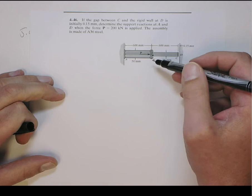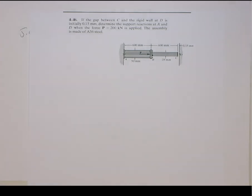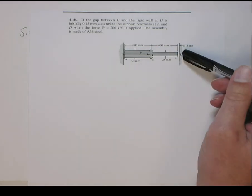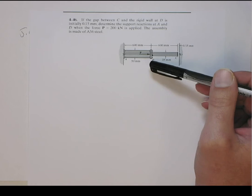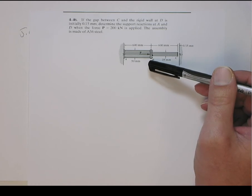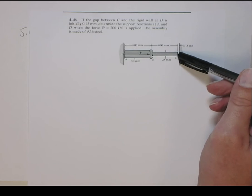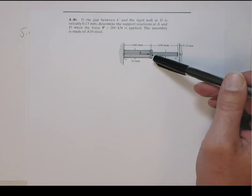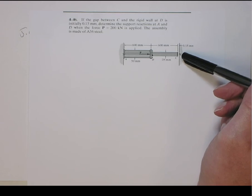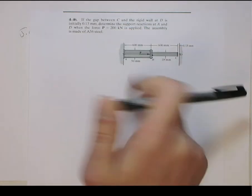Then we apply a force of 200 kN, and it wants you to find the support reactions at A and D. What's going to happen is if the force P is sufficient to elongate this such that it comes into contact at D, then it'll become a statically indeterminate problem. If P isn't big enough to stretch that 15 mm, then the wall is never in contact — the reaction force at A is the negative of P and the reaction force at D will be zero.